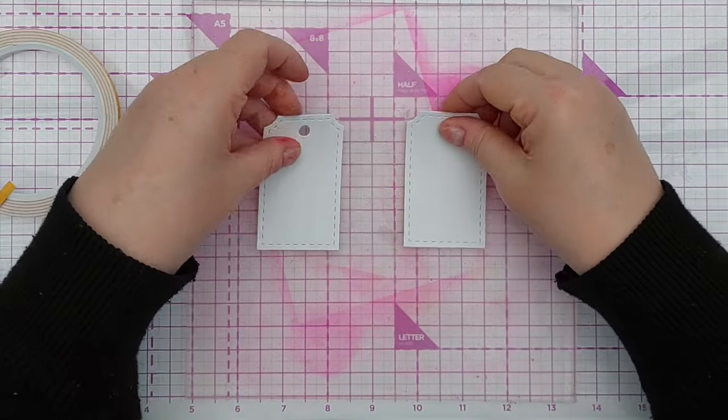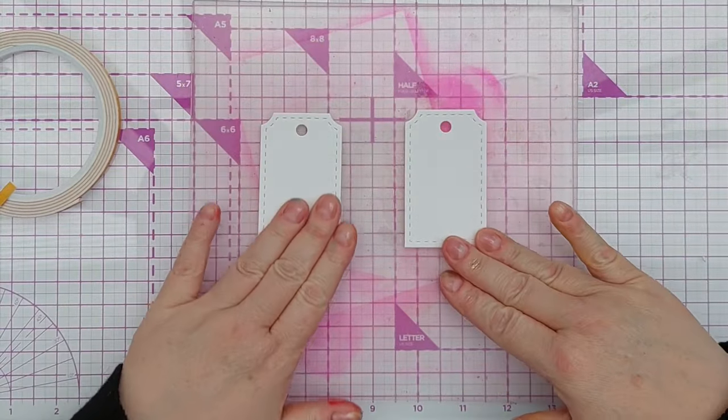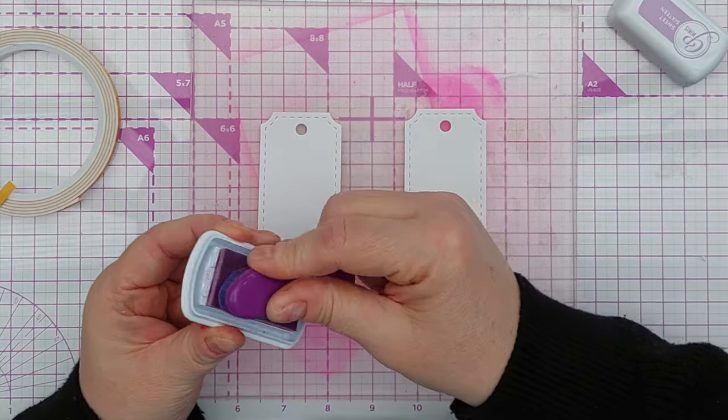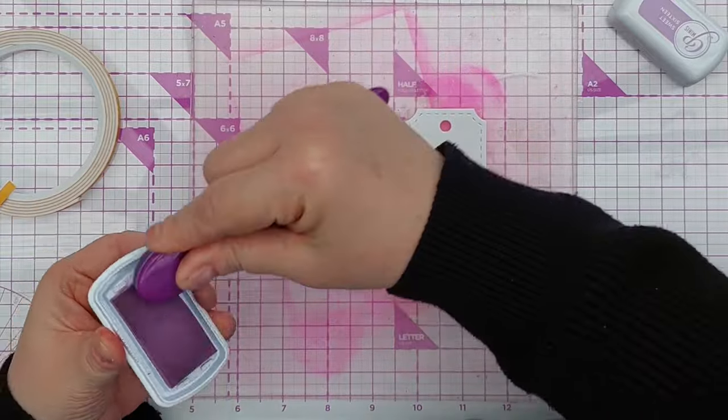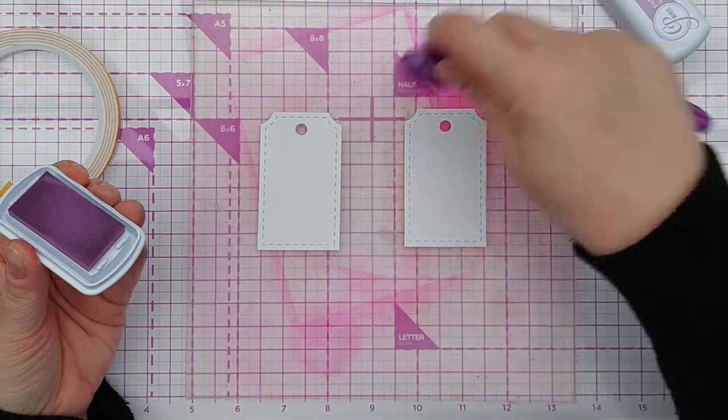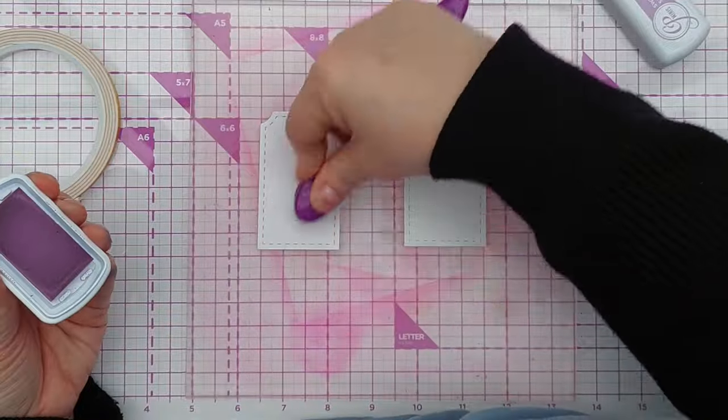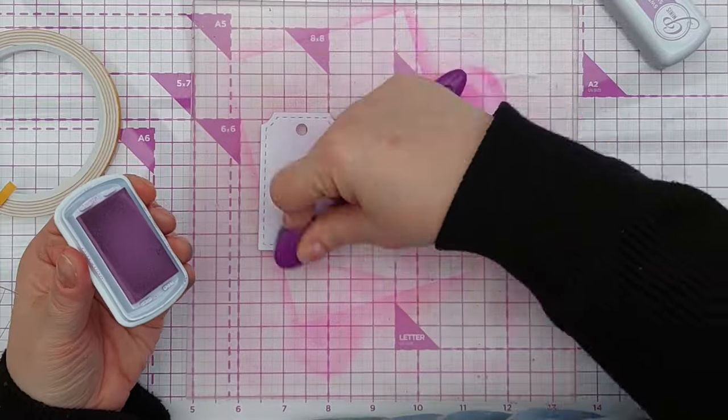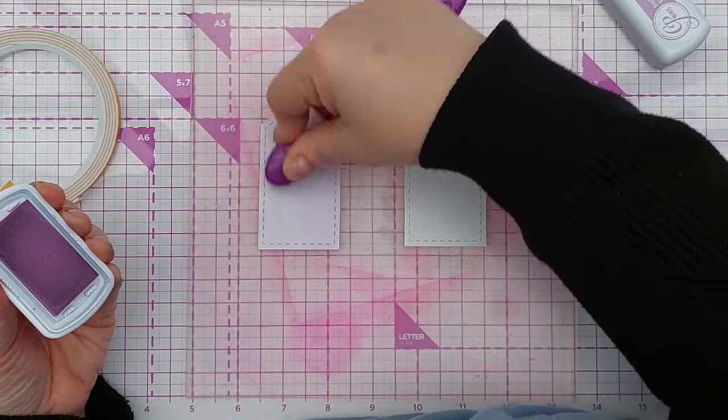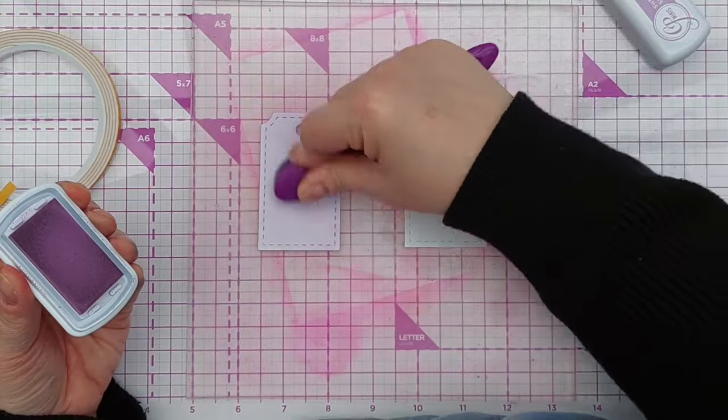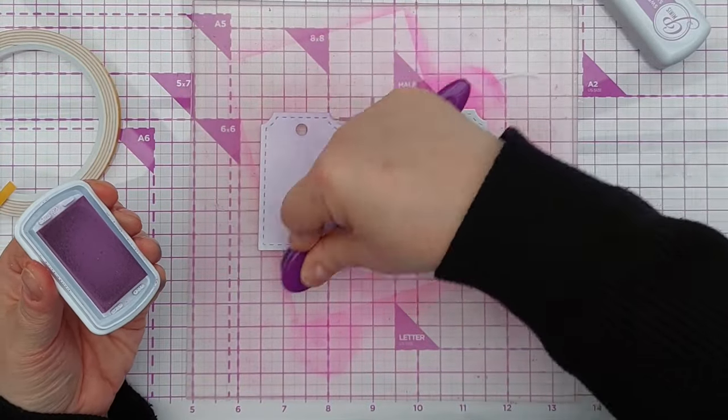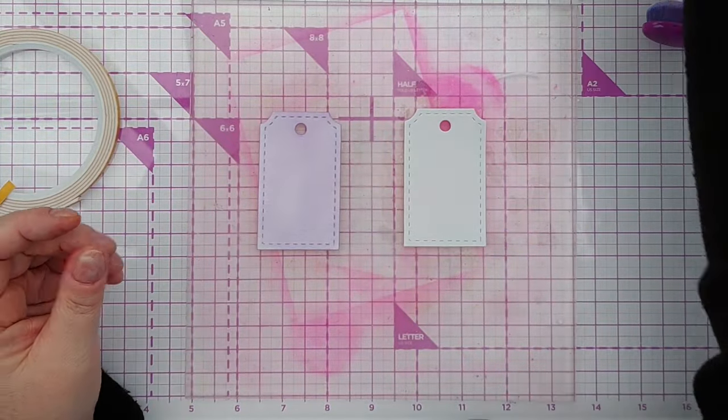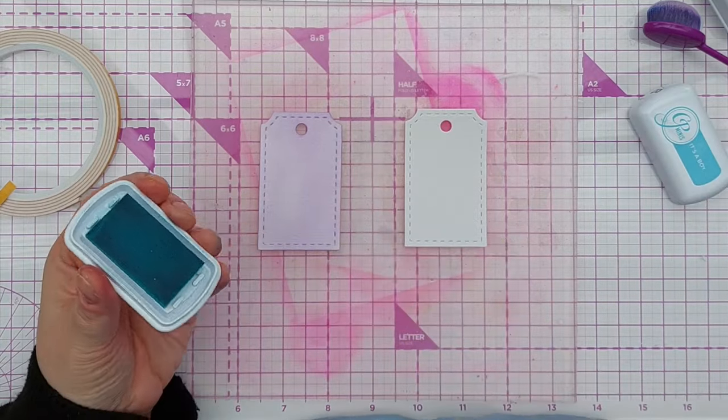Now I've got two other tags here and I want to add some other colors. One of them I'm going to color with Sweet 16, which is a violet. These tags that I'm doing the inking on are cut from mixed media paper because I find the Catherine Pooler inks really blend well on them and smooth out nicely. The other one I'm going to do is It's a Boy, which is a blue.